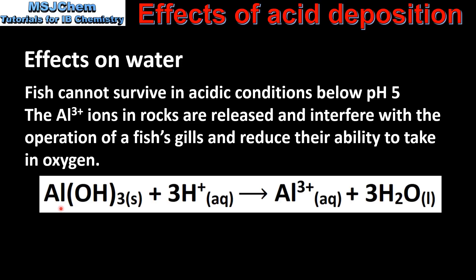The aluminium in rocks is in the form of insoluble aluminium hydroxide. This reacts with the hydrogen ions from the acid rain, releasing the aluminium ions and also forming water. The aluminium ions then interfere with the operation of the fish's gills.